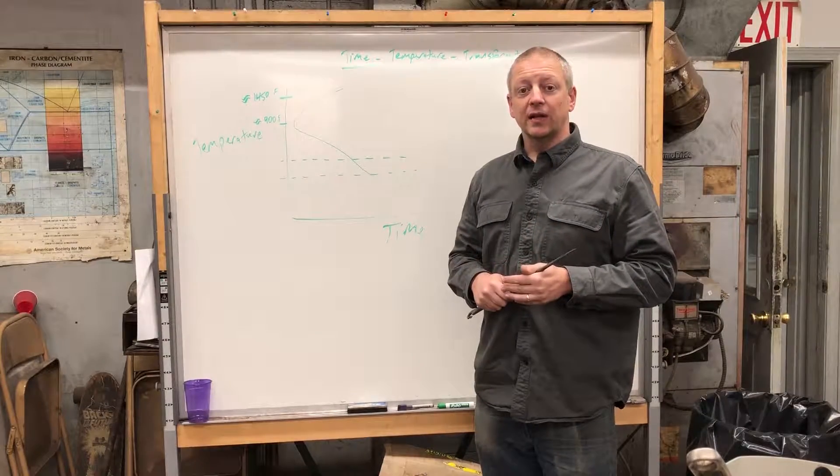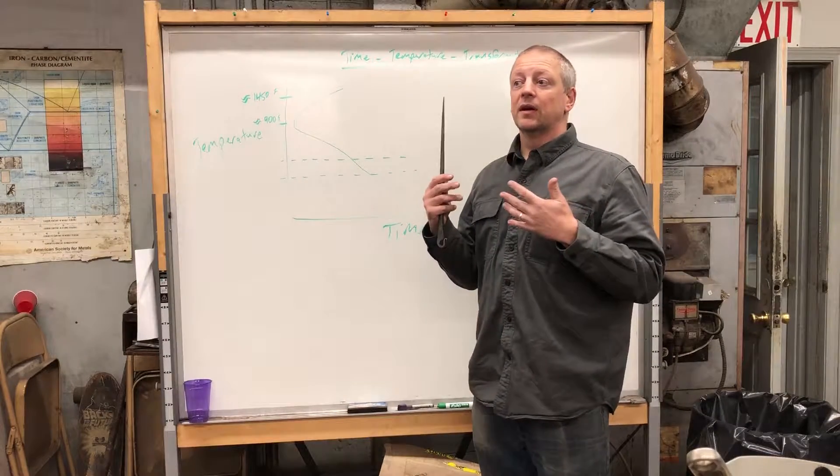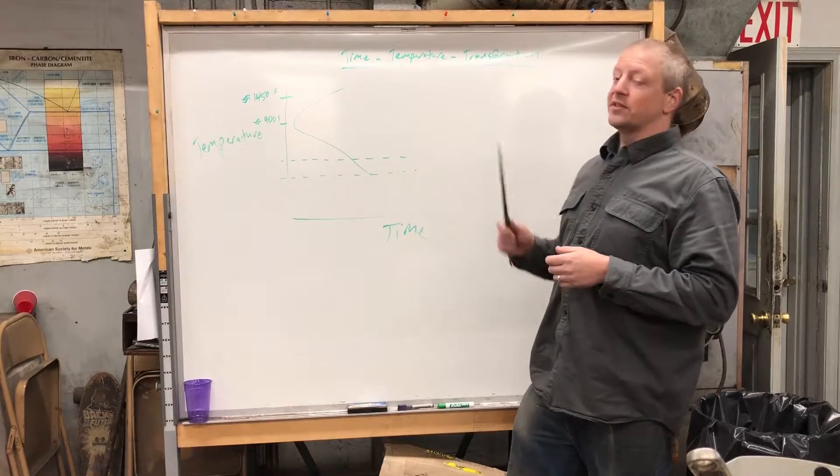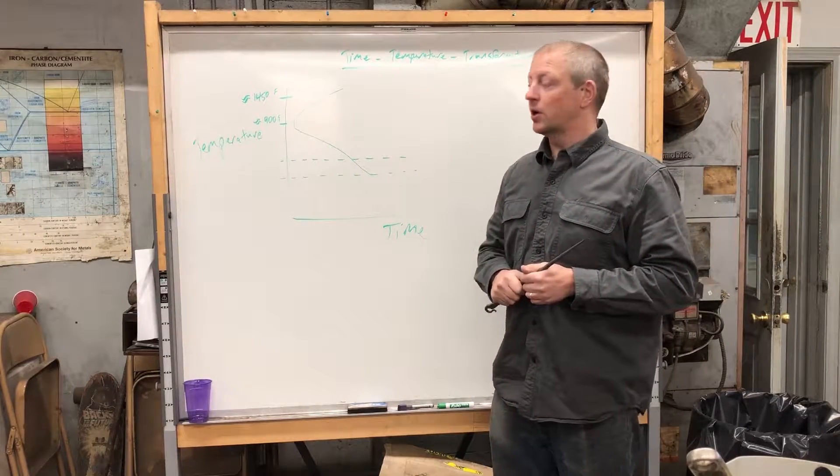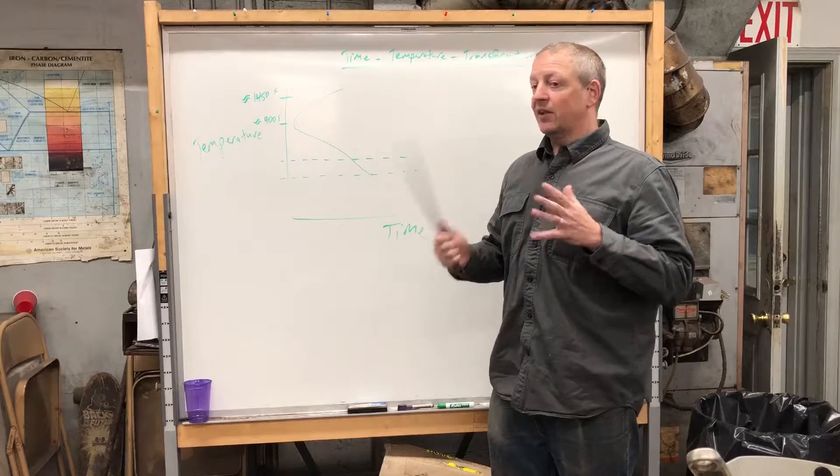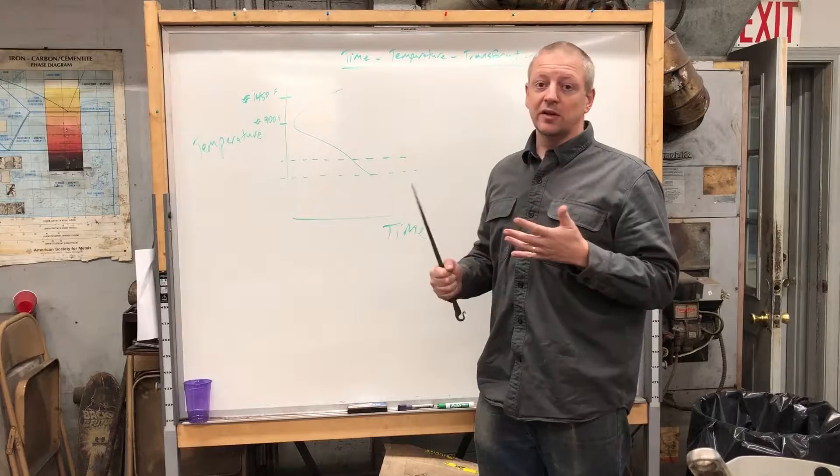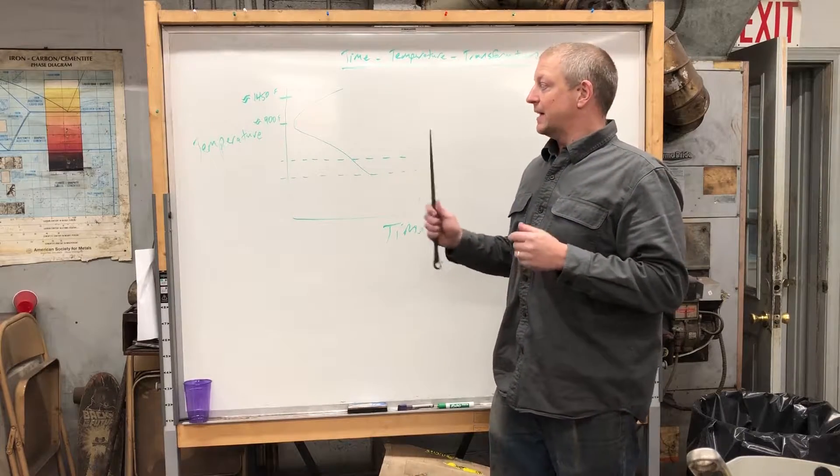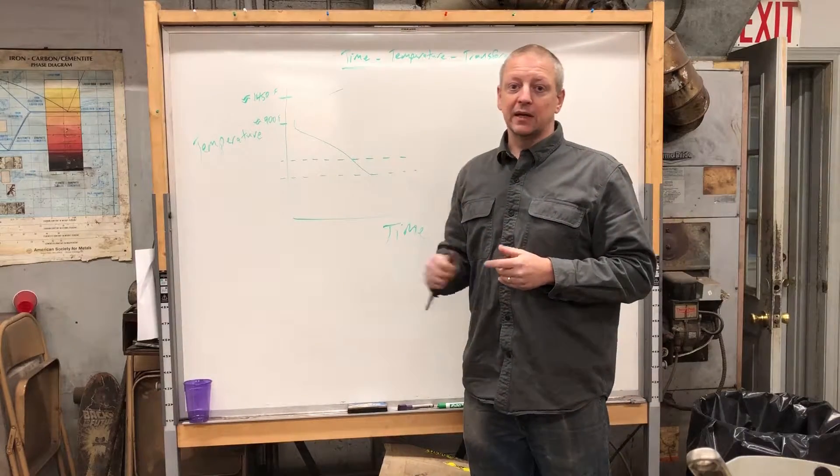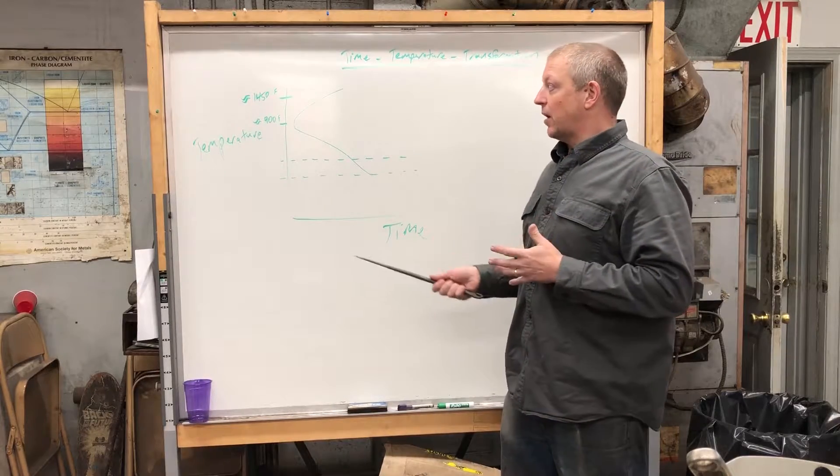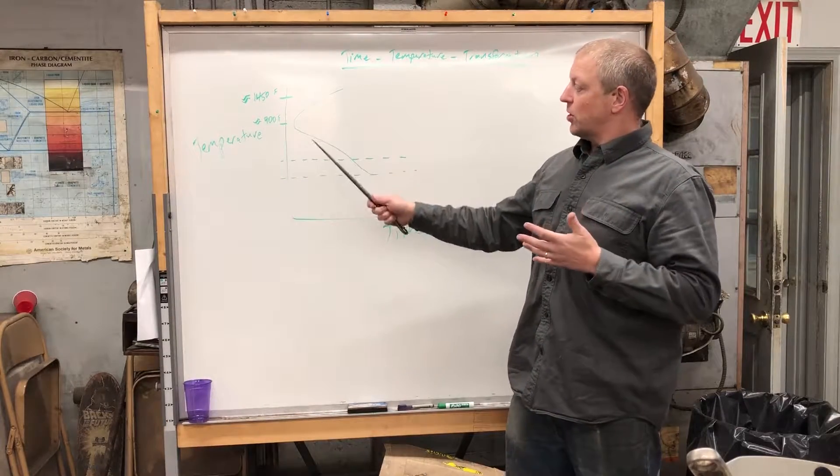Hey everybody, just here with a quick TTT or Time-Temperature-Transformation diagram talk. This is partly because we've been seeing in various places and hearing from various people issues with blades breaking during straightening.